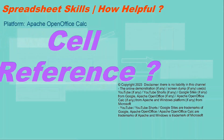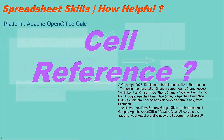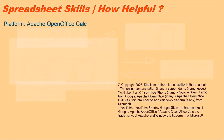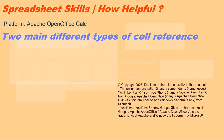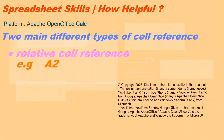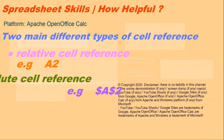Cell Reference in the platform of Apache OpenOffice Calc. There are two main different types of cell reference: Relative Cell Reference and Absolute Cell Reference.